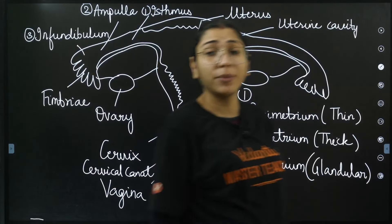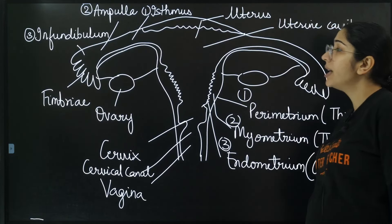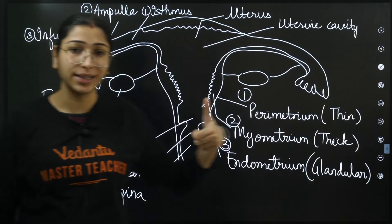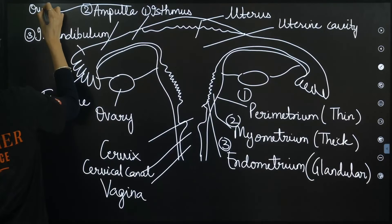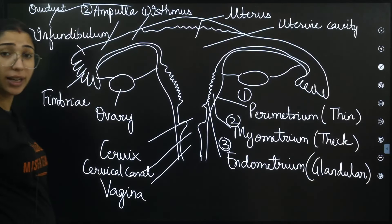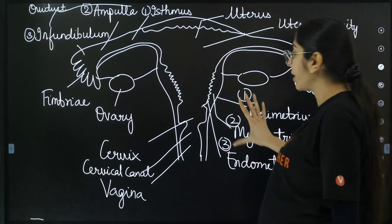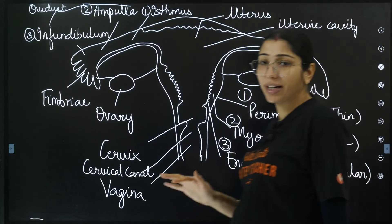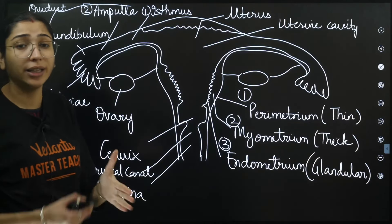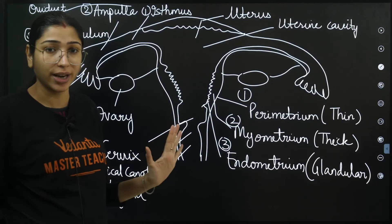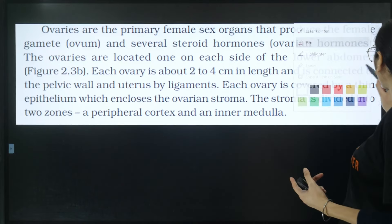Between the cervix and vagina is a region called the cervical canal. The cervix and vagina together can be called the birth canal. The external genitalia of the female is the vagina. To summarize the female reproductive system: primary sex organ - ovary; oviducts (fallopian tube) with three regions - infundibulum, ampulla, and isthmus; leading to the uterus with three wall layers - perimetrium, myometrium, and endometrium; and external opening - vagina.